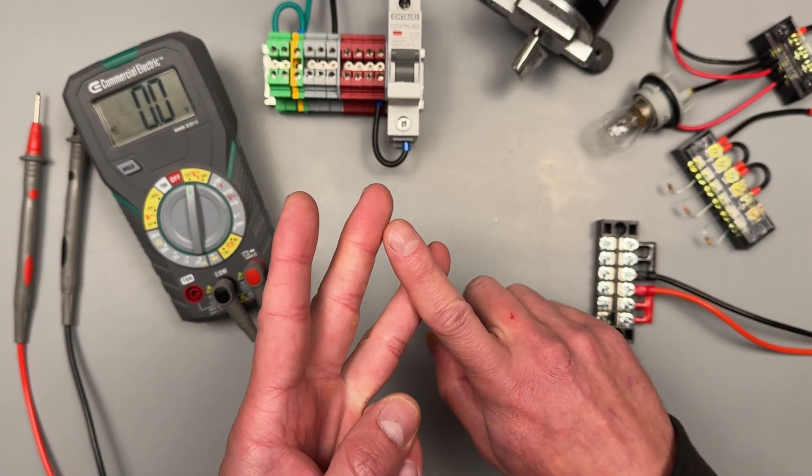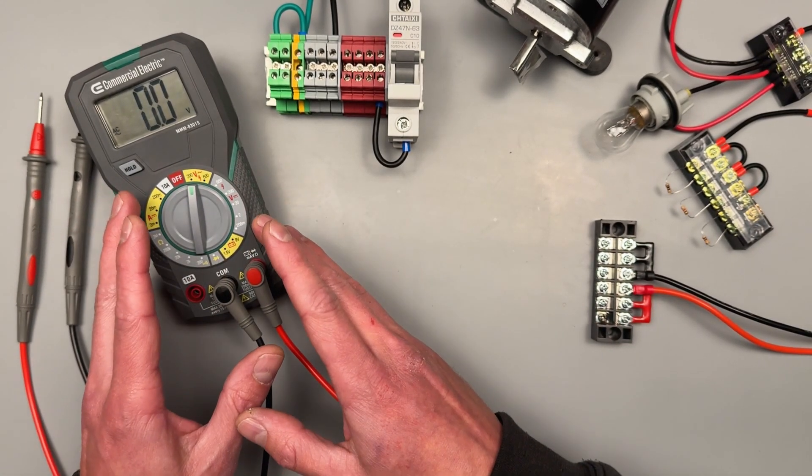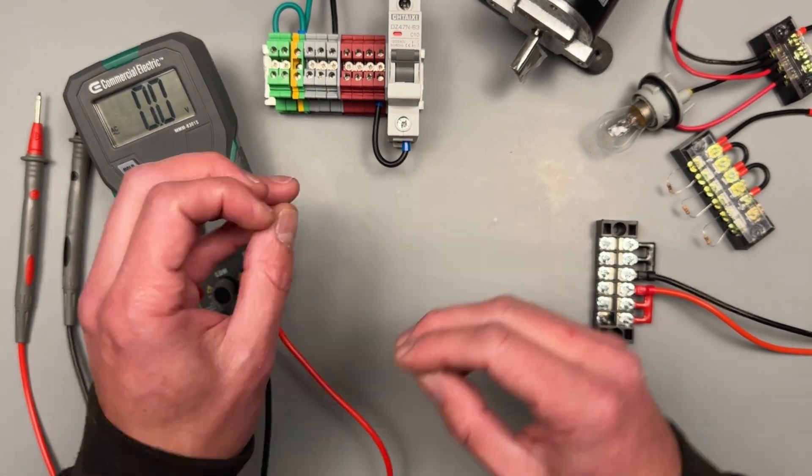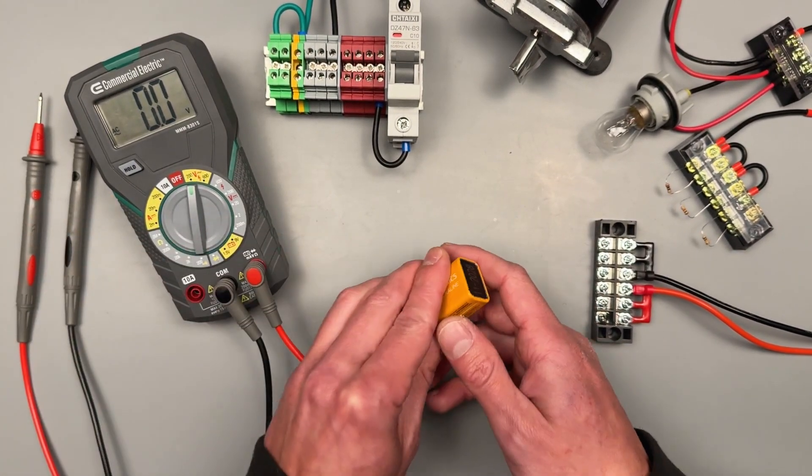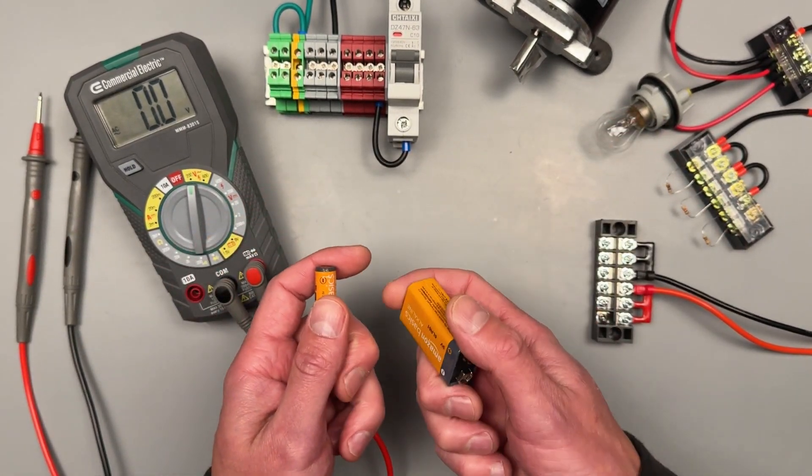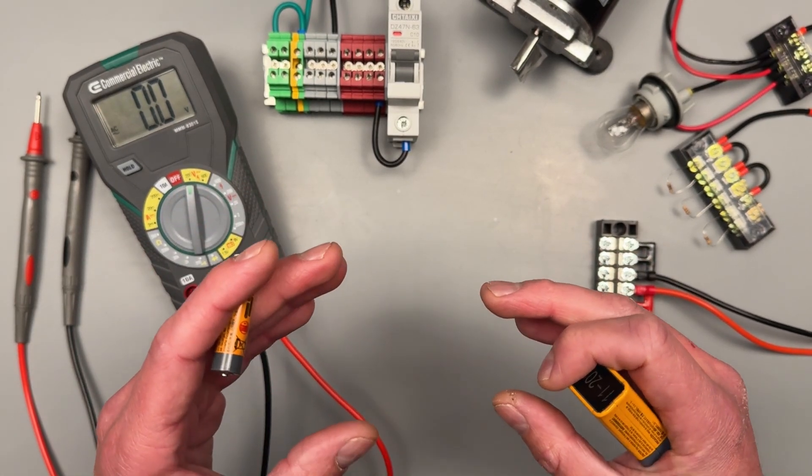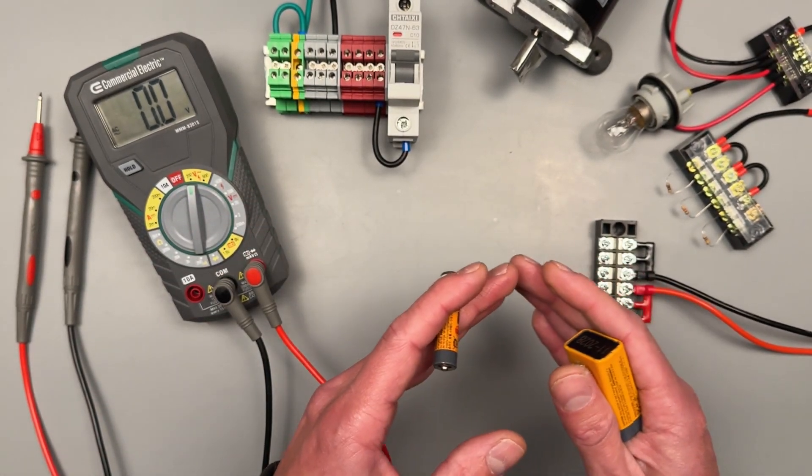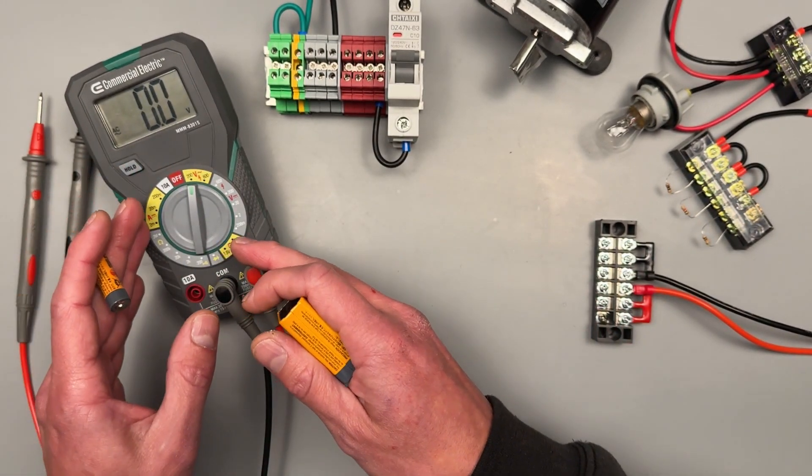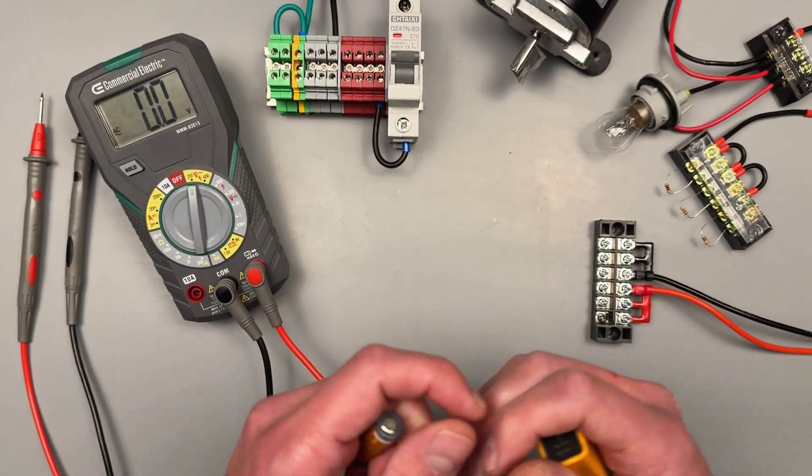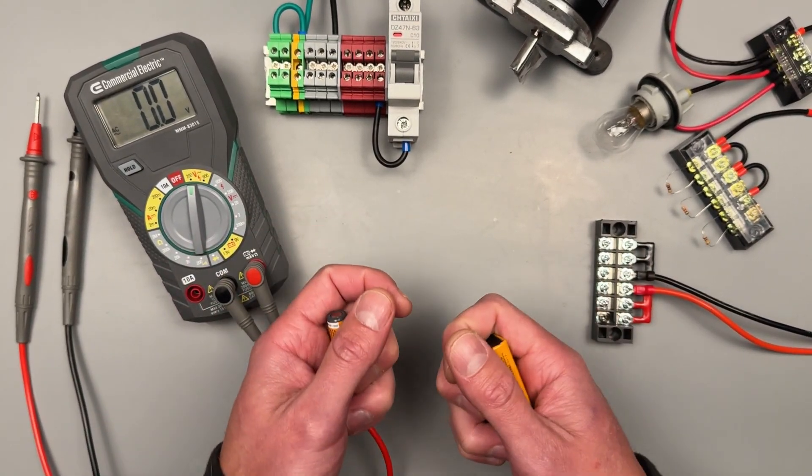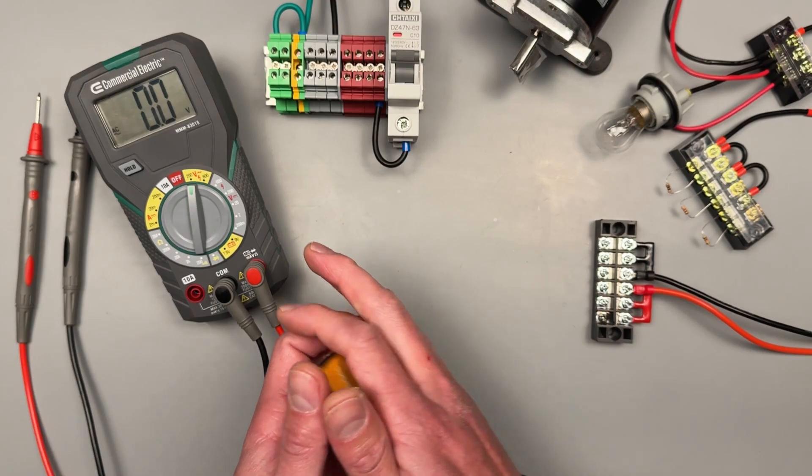I really suggest if you're new to meters, get a little bench setup, get a couple little things like some batteries and a little motor or a light bulb and practice your testing in a controlled environment where you can sit down and look through your owner's manual or you can go through YouTube with your meter before you go out and try to actually troubleshoot electronics in a real world scenario.